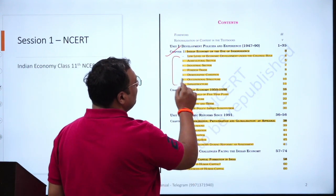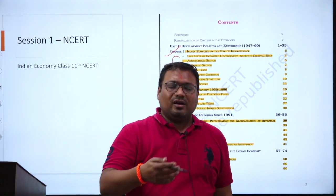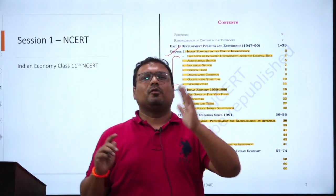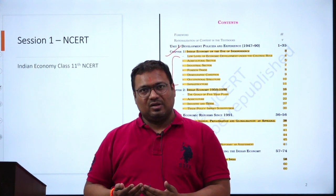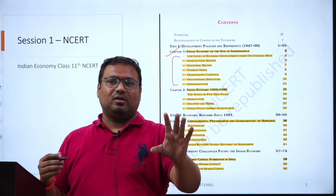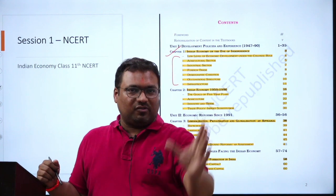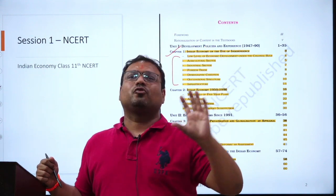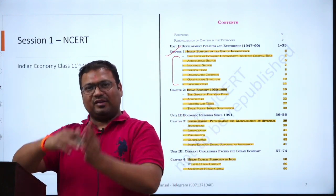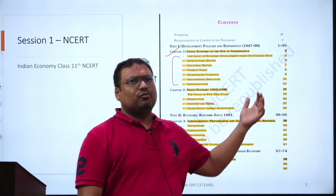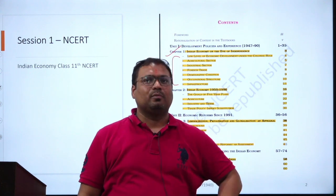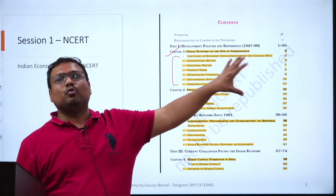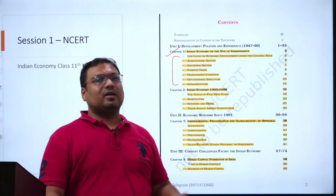In this part we will understand the impact of British rule and the conditions it created. From that we will understand why we opted for certain policies — why we opted for mixed economy, why we opted for a supply-side system, why we opted for heavy industrial policy. In the first phase of planning from 1950 to 1965, the focus was much more on industry compared to agriculture, while the next phase focused more on agriculture.